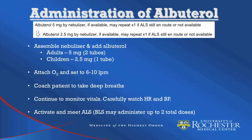In order to administer albuterol, the provider first needs to assemble the nebulizer and add the appropriate dose of albuterol. For adults, this is 5 milligrams or two pre-measured tubes. For children, 2.5 milligrams or one pre-measured tube. Attach oxygen to the nebulizer and set the flow between 6 and 10 liters per minute. Coach the patient to take deep breaths in through their mouth.